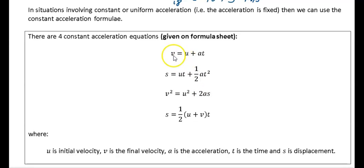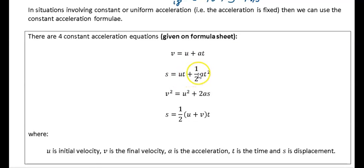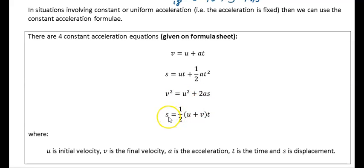The four formulas are: v = u + at; s = ut + ½at²; v² = u² + 2as; and s = ½(u + v)t.